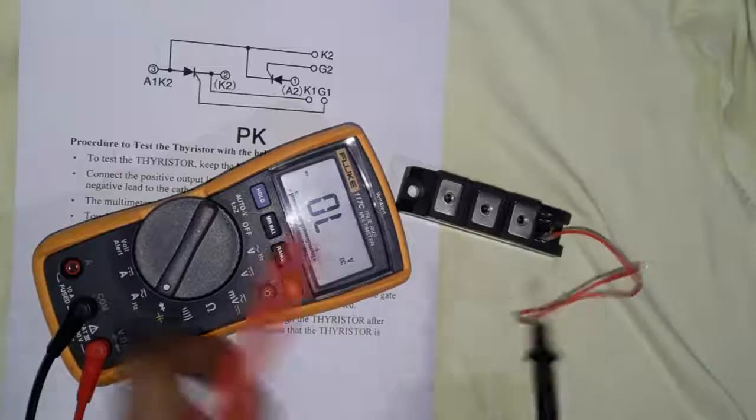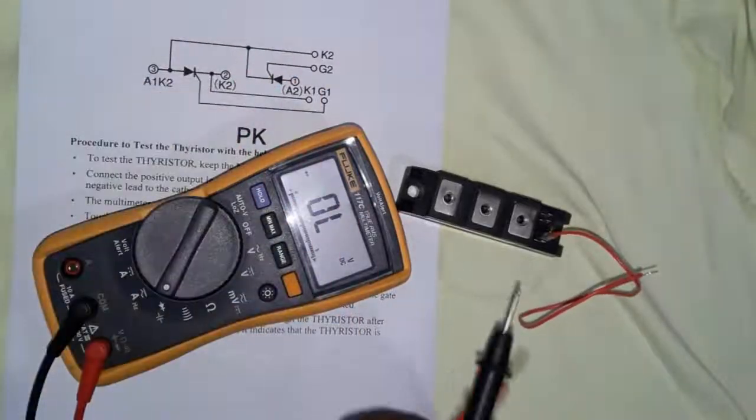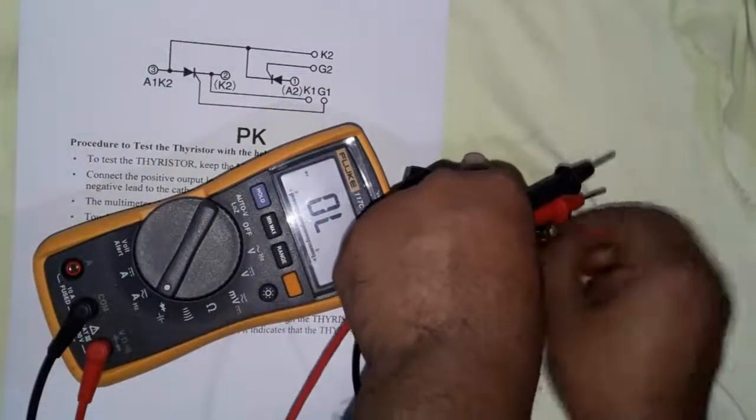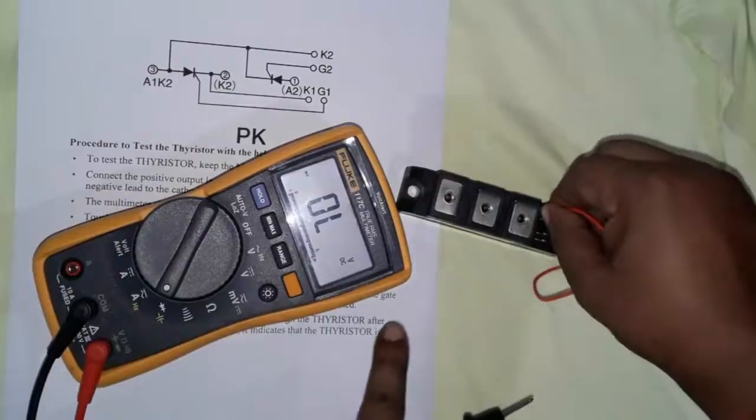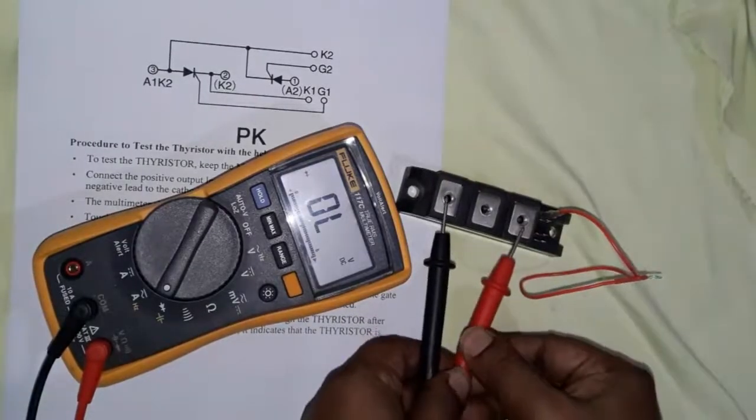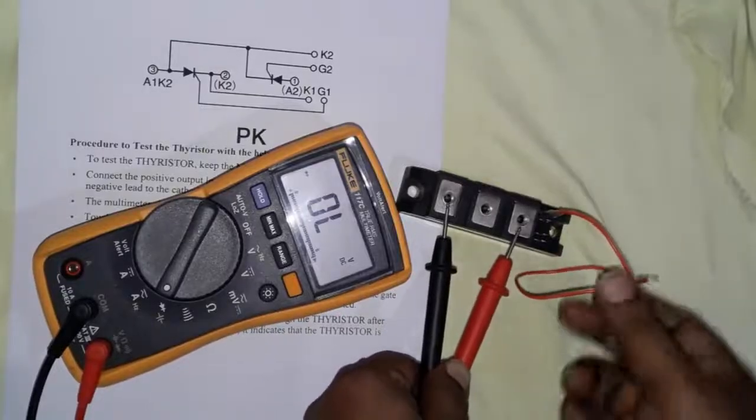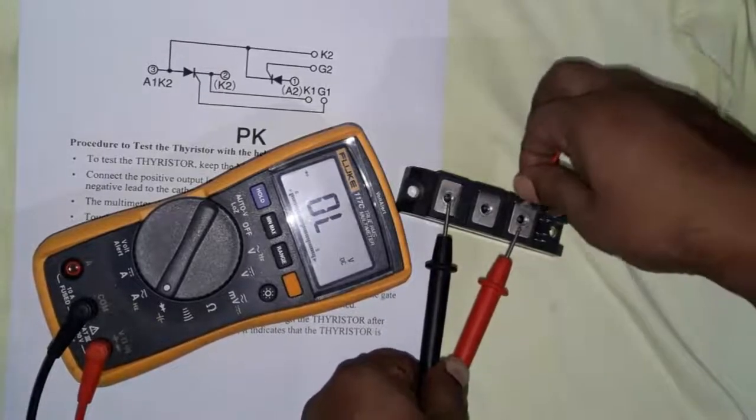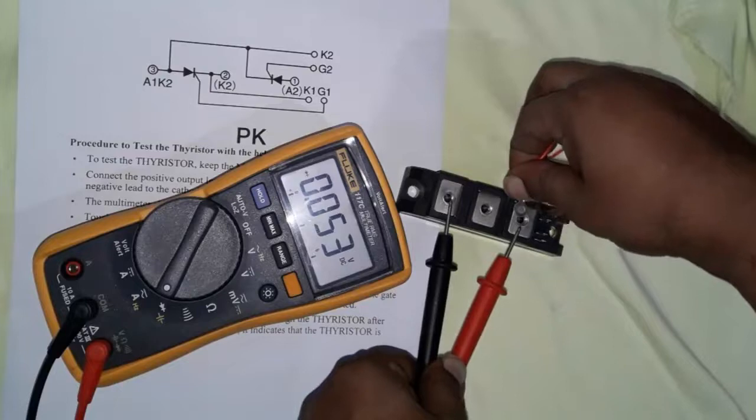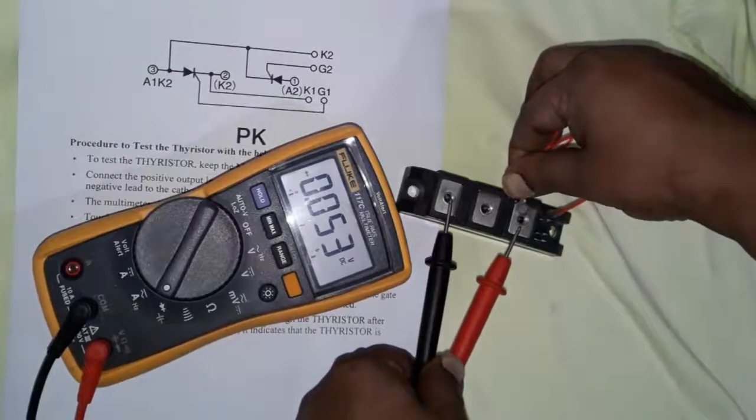For the second thyristor, we're testing gate two. Set the red probe to terminal one and black probe to terminal three. Touch gate two to the anode and it will show closed continuity. When disconnected, it will open.